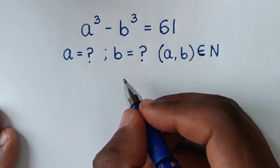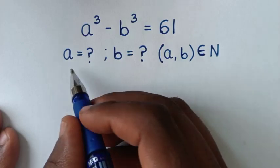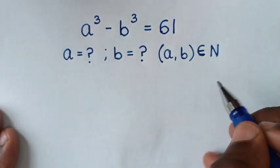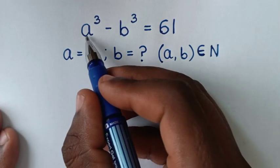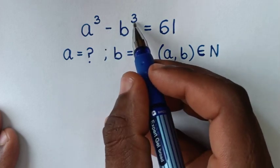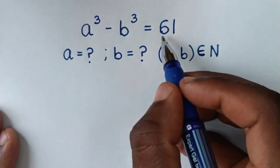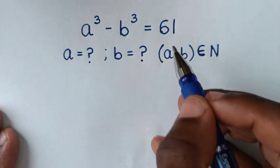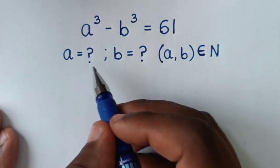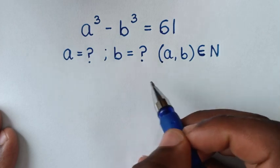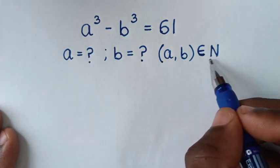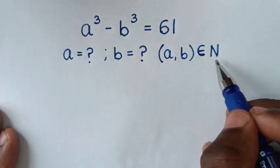Hello, you are welcome to solve this math problem, which is a³ minus b³ is equal to 61. To find the values of a and b, such that a, b is element of a natural number.